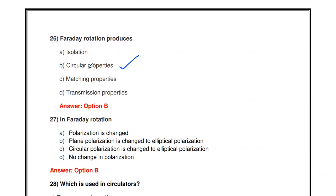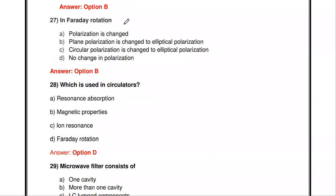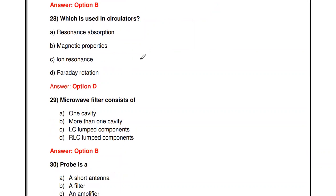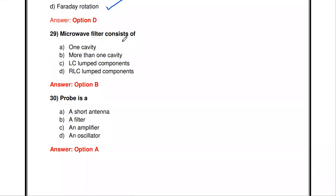The next question: Faraday rotation produces — isolation, circular properties, matching properties, or transmission property? Faraday rotation produces circular properties. In Faraday rotation, plane polarization is changed to — elliptical polarization, circular polarization changed to elliptical, or no change? Plane polarization is changed to elliptical polarization. Which property is used in circulators — resonance absorption, magnetic properties, ion resonance, or Faraday rotation? Faraday rotation is used in circulators.